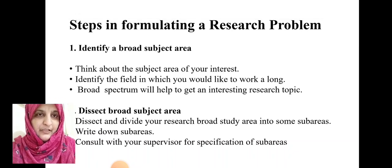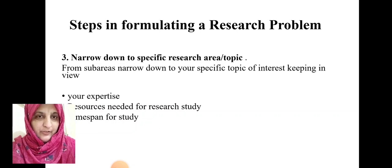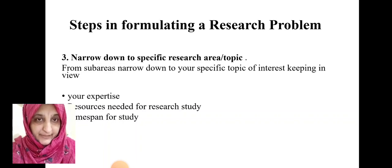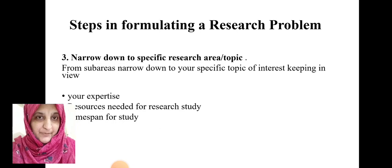So the first step was identification and the second step was the dissection of the broad spectrum subject area. The third step is to narrow down to the subject-specific research area or topic. From the sub-areas identified in the first two steps, you should narrow down to the specific area or topic depending upon your expertise, available resources in the laboratory or field study, and the time span of the research study.